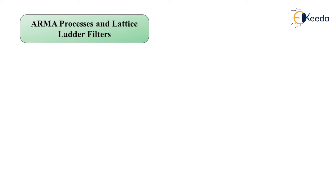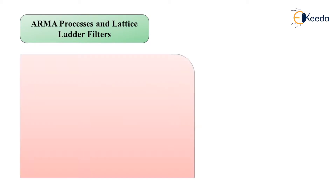Our topic is titled ARMA Processes and Lattice Ladder Filters. The study is in two parts: first, what are the ARMA processes, and then the lattice ladder filters. We are already covered with an introduction to ARMA processes — AR standing for autoregressive, MA standing for moving average. The ARMA random process is a special type of random process, introduced in the third chapter on discrete-time random processes.